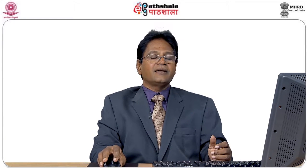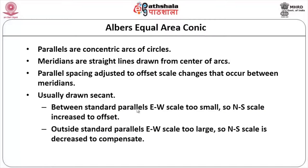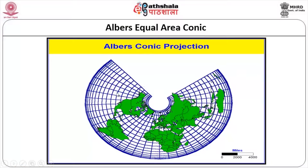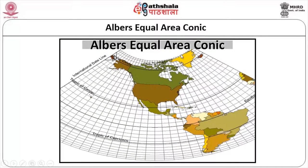They adjust the parallels so there will not be any effect of the meridians getting distorted. Usually drawn on the secant, between standard parallels the east-west scale is too small, so the north-south scale is increased to offset that. Outside the standard parallels the east-west scale is too large, so the north-south scale is decreased to compensate. This is the output of the Albers conic projection — it is an equal area conical projection, and if you use the Tropic of Cancer as the standard parallel, the area is relatively the same between the meridians.